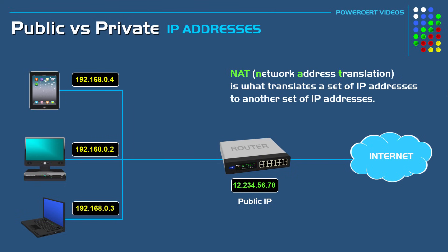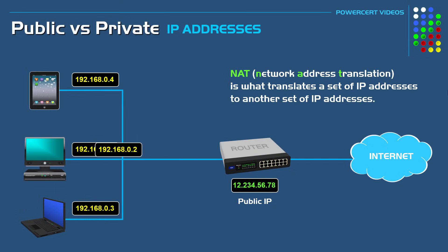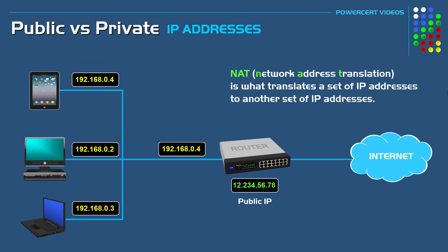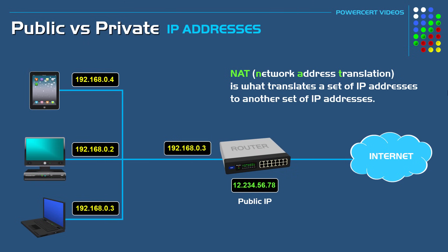Not only does NAT translate private to public, but it also translates public to private. Because if a computer on the internet wants to communicate with a computer on a private network, the public IP address needs to be translated by NAT to the private IP address for that computer.